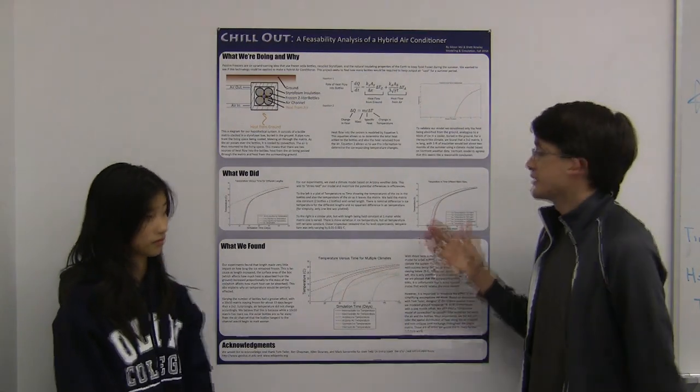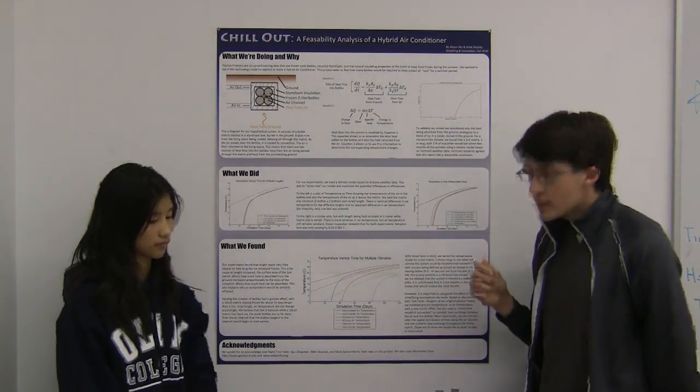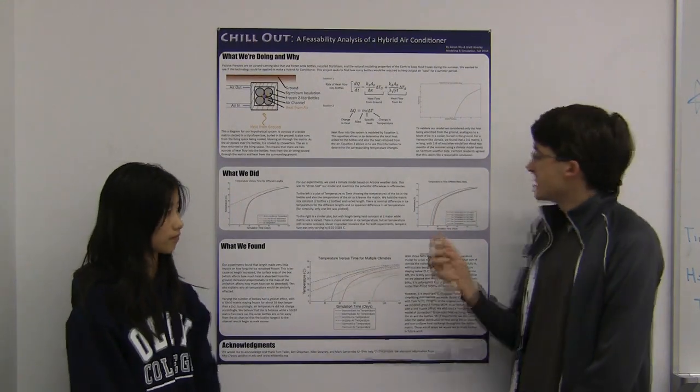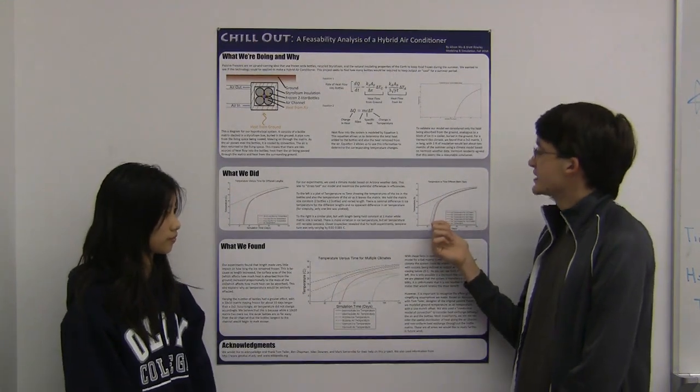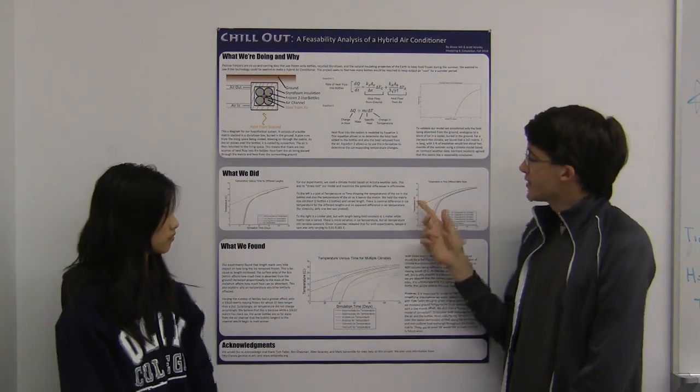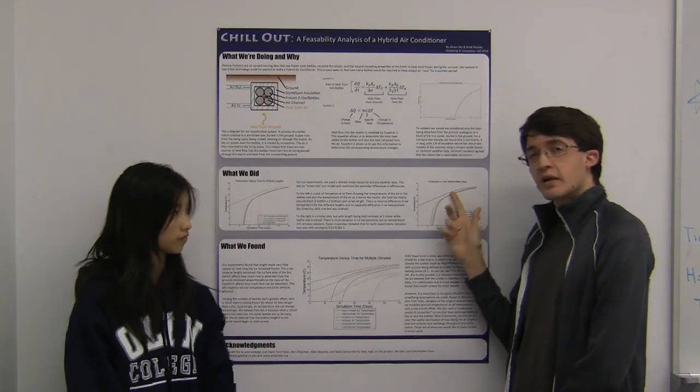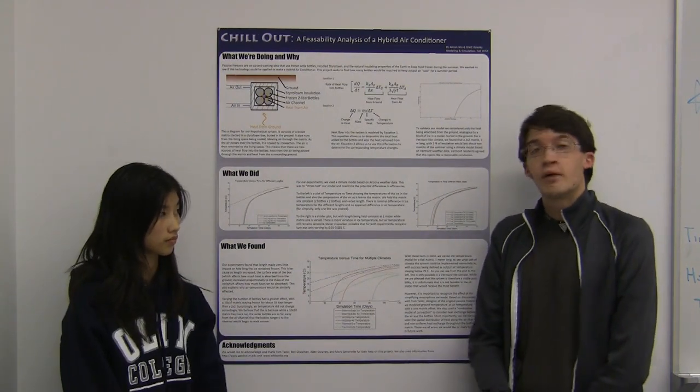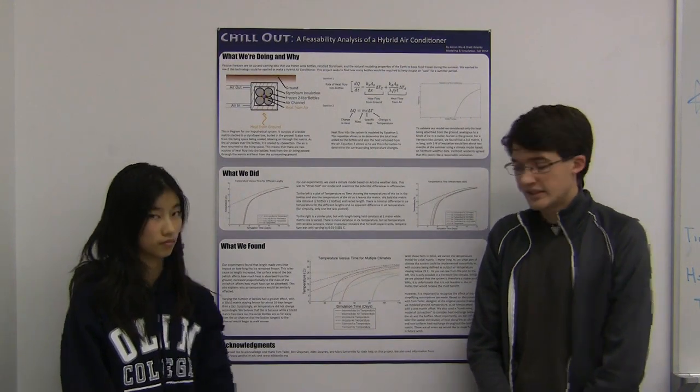Our second experiment was to vary the size of the matrix itself. This had a greater effect on the temperature of the ice, with a larger matrix staying frozen approximately 10 days longer. Interestingly, air temperature still appeared to remain constant. Closer analysis showed that air temperature did change for different matrix sizes, but only in the order of about 0.001 degrees Celsius.